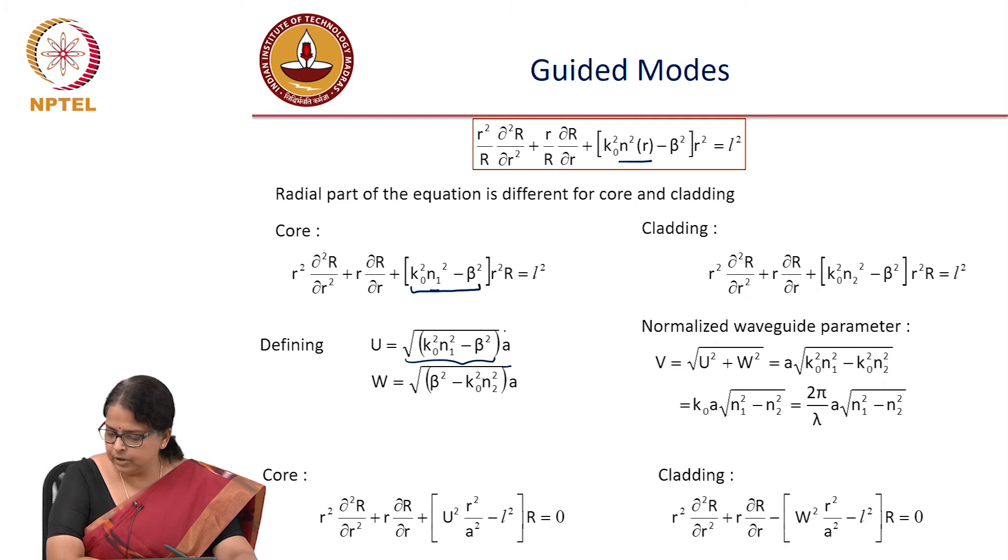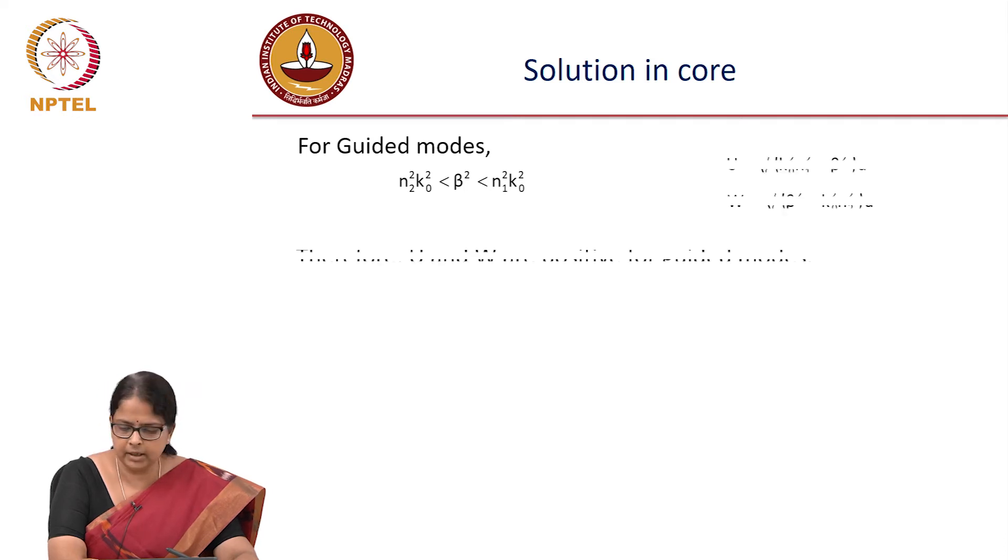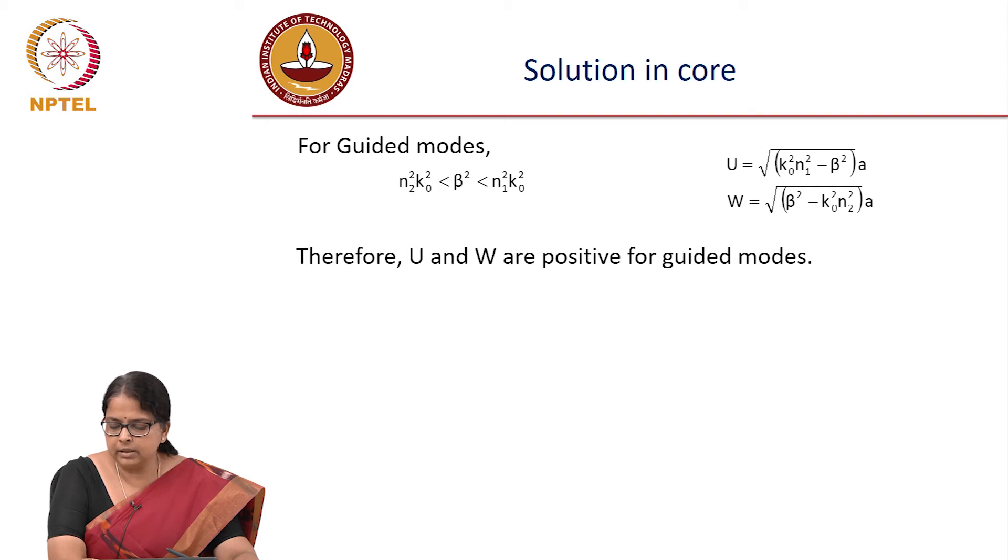You have in the cladding, you have this equation. There is an error when l square comes here, there is a negative, so this should be positive. Now, we are looking at solutions. Now in the core, we already know that for the guided modes, this condition needs to be satisfied. So, u and w are positive that we have already recognized.